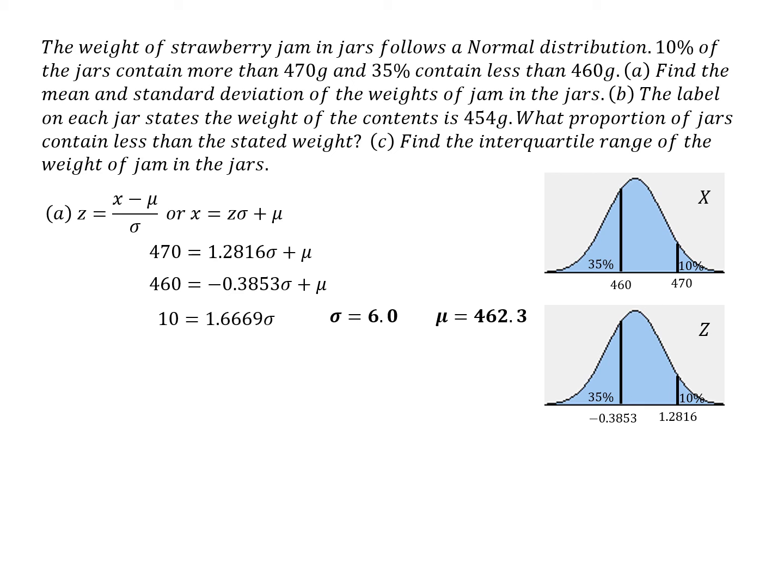So sigma is six, almost six exactly. And then when I put that value of sigma back into either of these equations, then I find the value of mu is 462.3. And that's what I would have hoped to have got if that's the mean there. Somewhere between 460 and 470, but much closer to 460 than 470. And so I'm happy that that number looks about right. So we've done, we found the mean and standard deviation of the weights of jam in the jars.